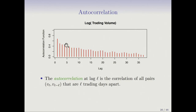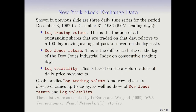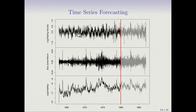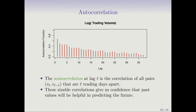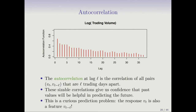The correlation is not much lower between values two days apart. So that's what's known as autocorrelation. The series is not chaotic — the trading volume tends to go up for a while, come down for a while. The Dow Jones return looks much more chaotic. These small trends in the trading volume are a reflection of this autocorrelation, and these sizable correlations give us confidence that past values will be helpful in predicting the future.